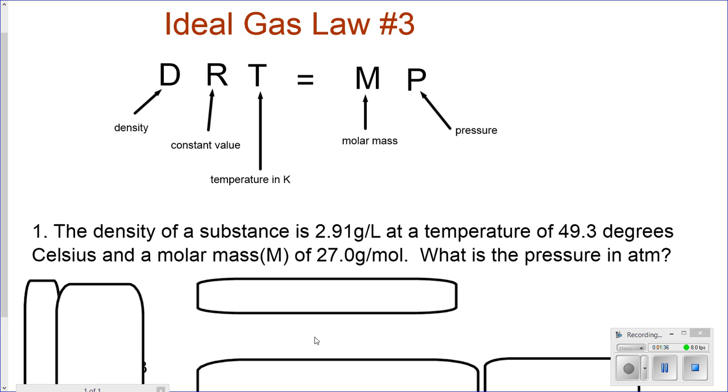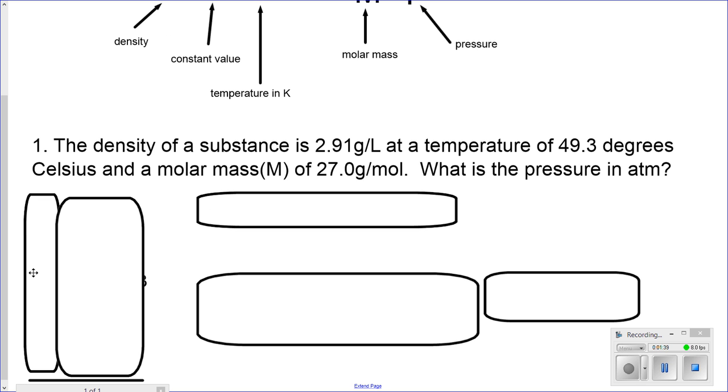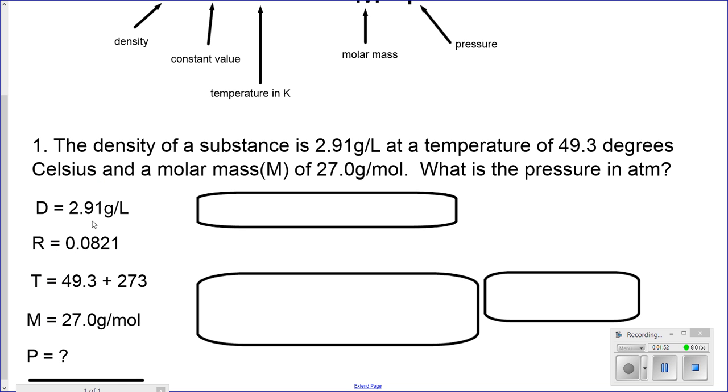I will look at my list of items given to me. I am given density, the value of R, T, and molar mass. Therefore, I have density 2.91 grams per liter, R 0.0821 depending on pressure.